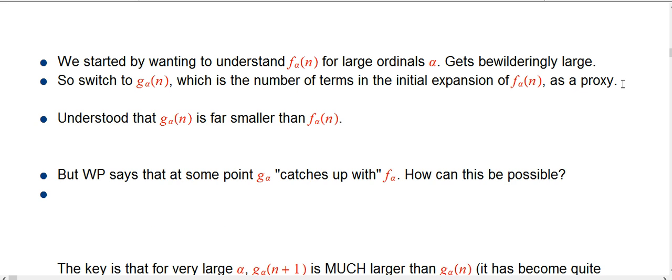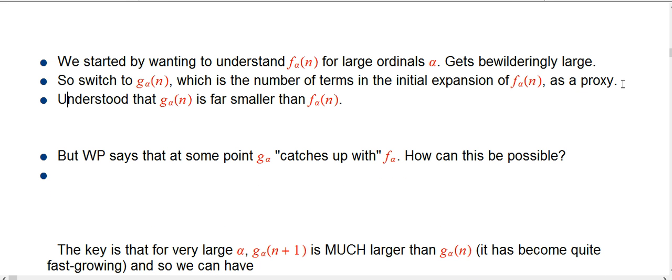It was understood through all that, that g_α(n) was far, far smaller than f_α(n), but that it gave some measure, and in particular, that we could see as the α increased, the g alphas were increasing for a given n, and that kind of gave us an idea of how big α was as an ordinal, and very roughly how big f_α was. But it was understood that it was just a very, very pale, weak shadow.